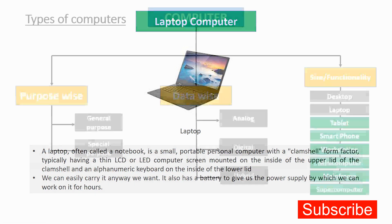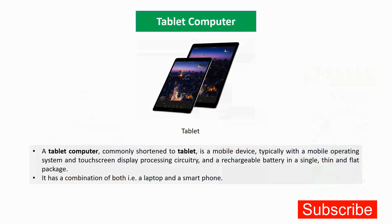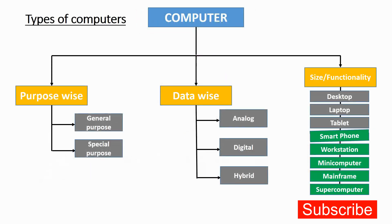A tablet is basically a combination of a laptop and a smartphone. It is a mobile device with a mobile operating system, a touchscreen display, processing circuitry, and a rechargeable battery in a thin and flat package. It is not fully a laptop nor fully a smartphone — it comes between them, offering functionality of both, and is also a digital machine.